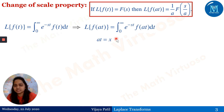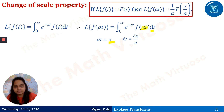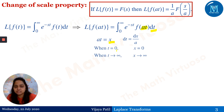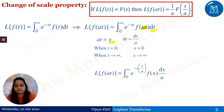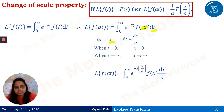We make the substitution: let at = x. So dt = dx/a. When t = 0, x = 0; when t = infinity, x = infinity — the limits remain the same. So the Laplace transform of f(at) becomes the integral from 0 to infinity of e^(−sx/a) f(x) dx/a. Here, t is replaced as x/a, so at = x means f(at) = f(x), and dt is replaced as dx/a.